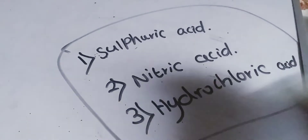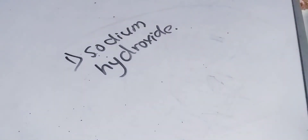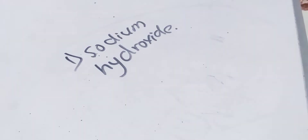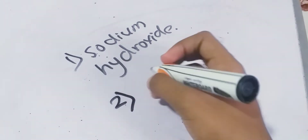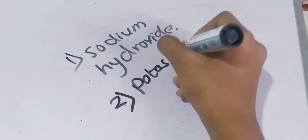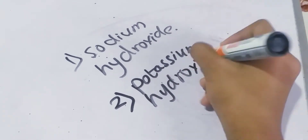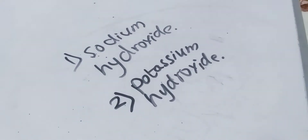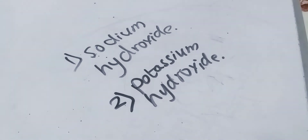Now let us learn the two types of base substances used in the laboratory. The first base is sodium hydroxide and the second base is potassium hydroxide. To summarize: the strong acids used frequently in the laboratory are sulfuric acid, nitric acid, and hydrochloric acid. The strong bases used frequently in the laboratory are sodium hydroxide and potassium hydroxide.